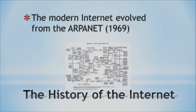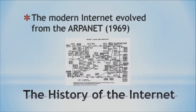Continuing with the history of the internet: the internet evolved from ARPANET, which stands for Advanced Research Projects Agency Network. It was connecting four universities: the University of California at LA, the Stanford Research Institute, the University of California at Santa Barbara, and the University of Utah at Salt Lake City.